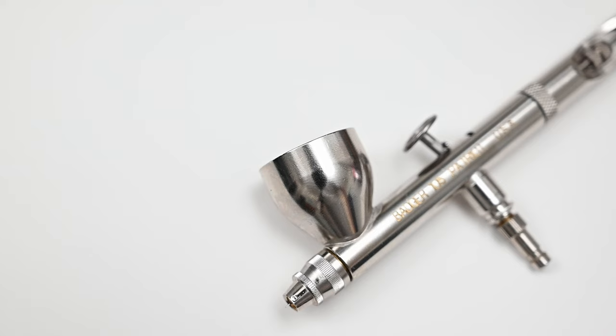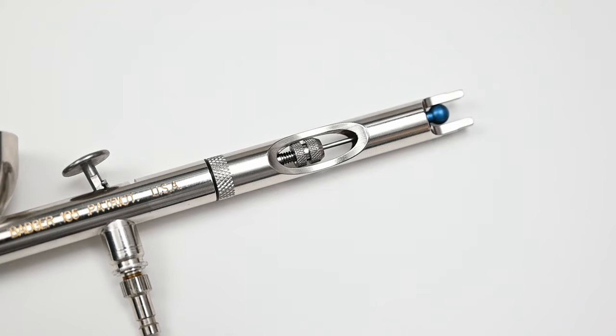And with this large gravity fed paint cup which is 10 milliliters or about a third of an ounce, you're able to add plenty of paint for wide coverage like base coating models or backgrounds in fine art. This rear handle is equipped with a cutaway and you could use this to quickly flush out any clogs in the nozzle.